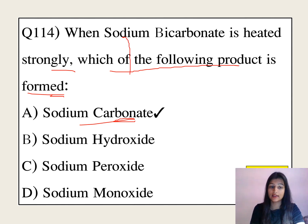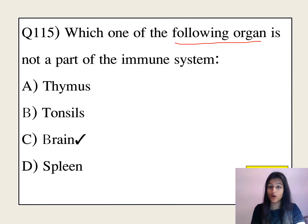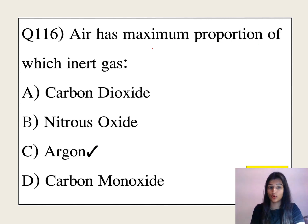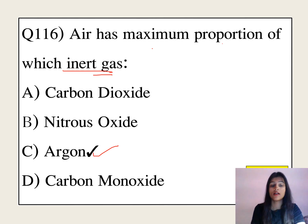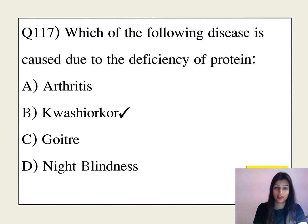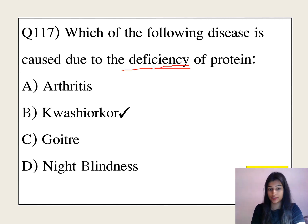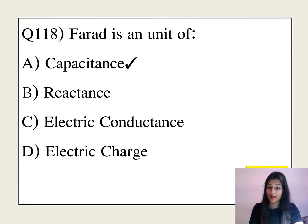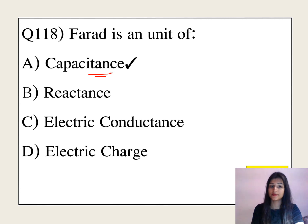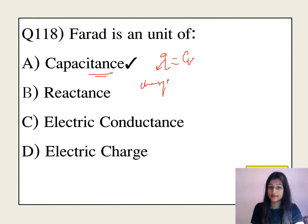Which organ is not a part of the immune system? The answer is the brain. Air has the maximum proportion of which inert gas? The answer is argon. Which disease is caused due to deficiency of protein? The answer is kwashiorkor. Farad is the unit of capacitance — the ability of a substance to hold electric charge. The formula is Q = CV, where Q is charge, C is capacitance, and V is voltage.